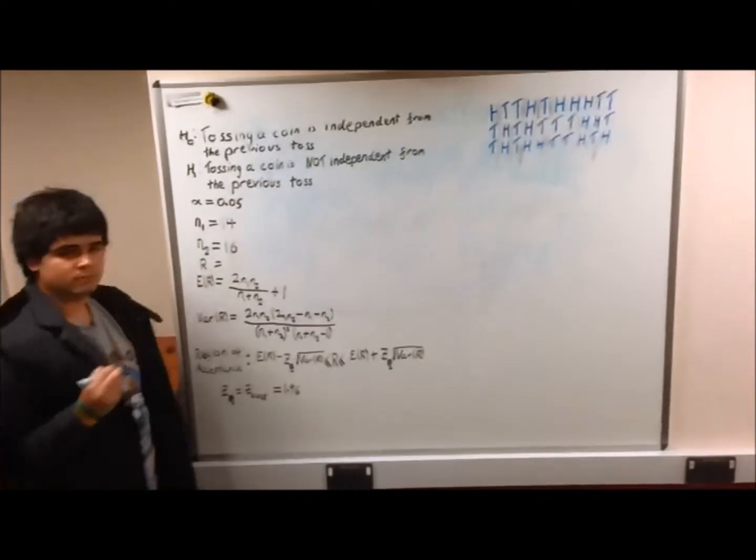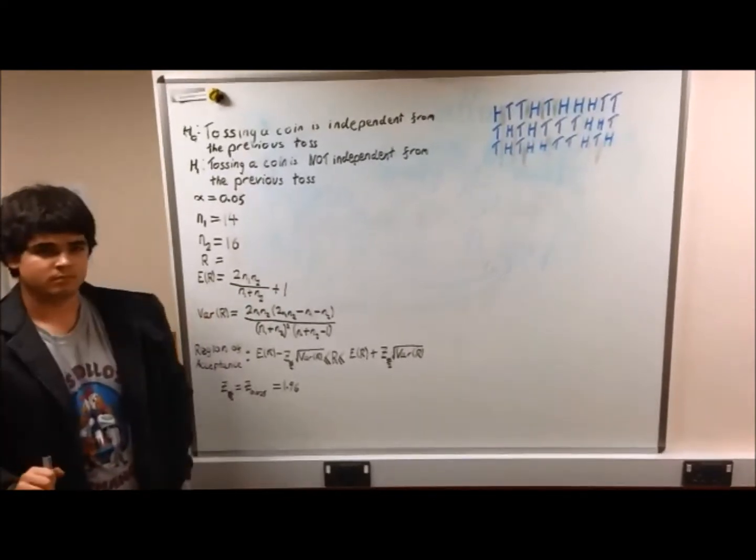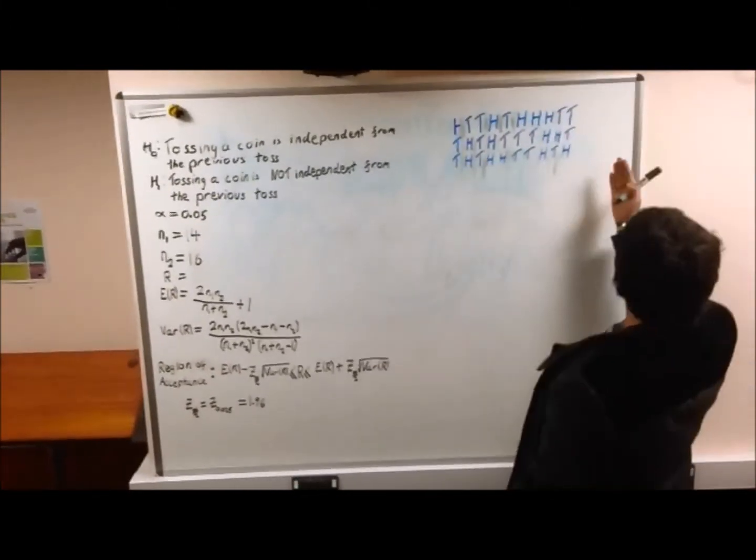The next thing we need is the expected value and the variance of R. R is the number of runs which is the number of consecutive sequences of N1 or N2.